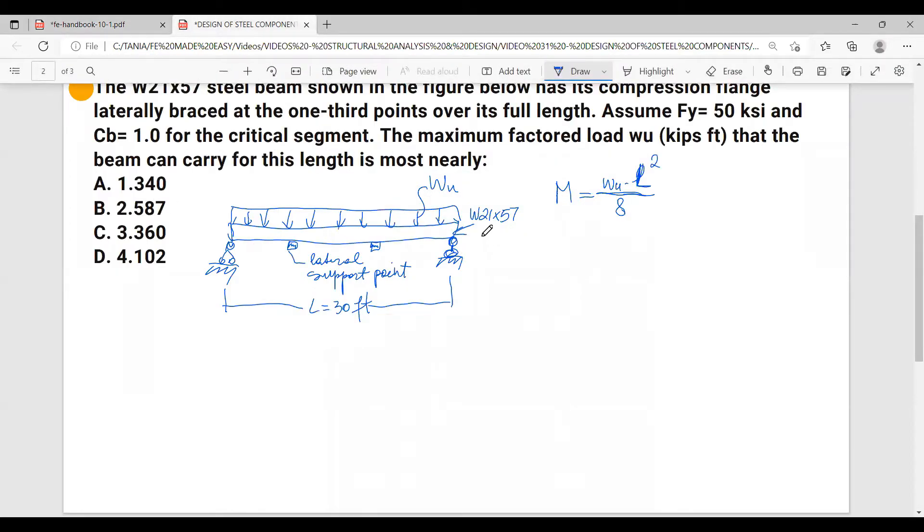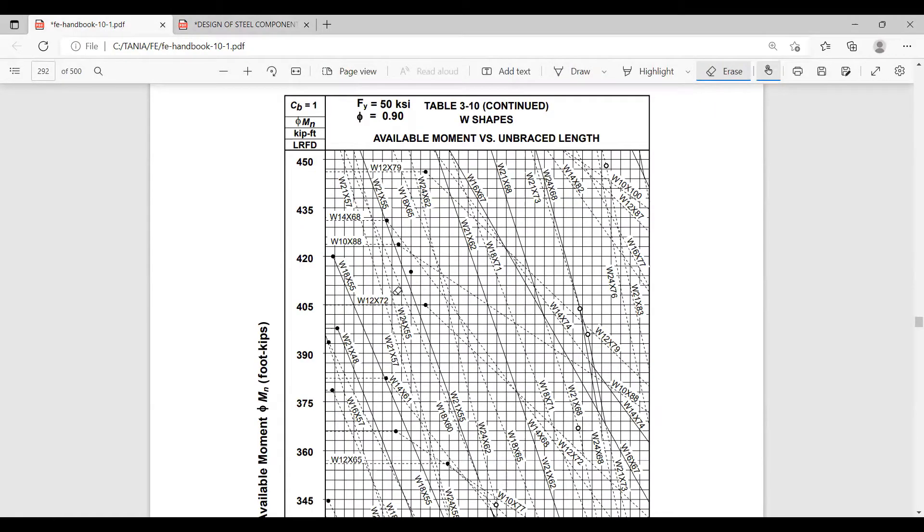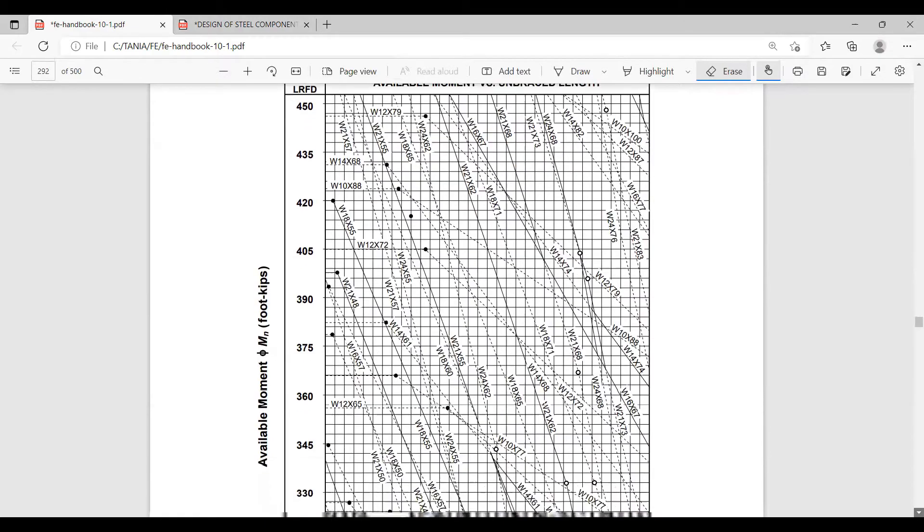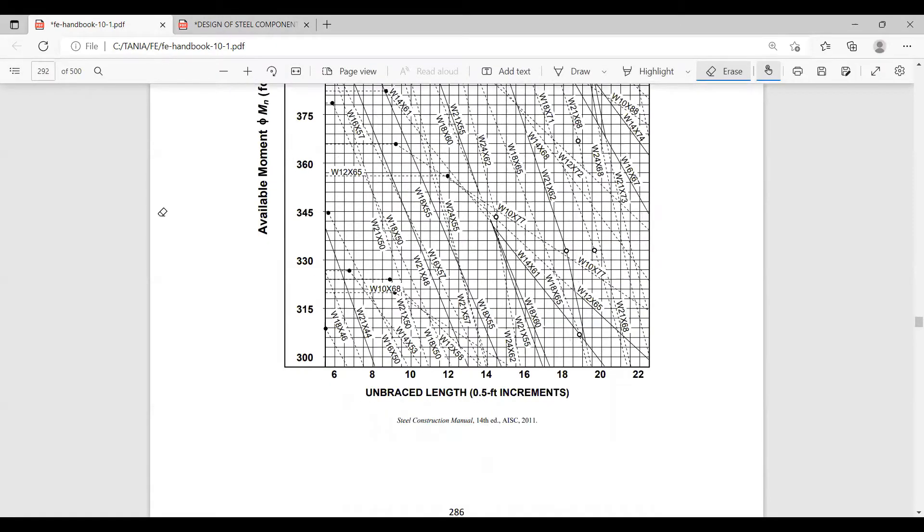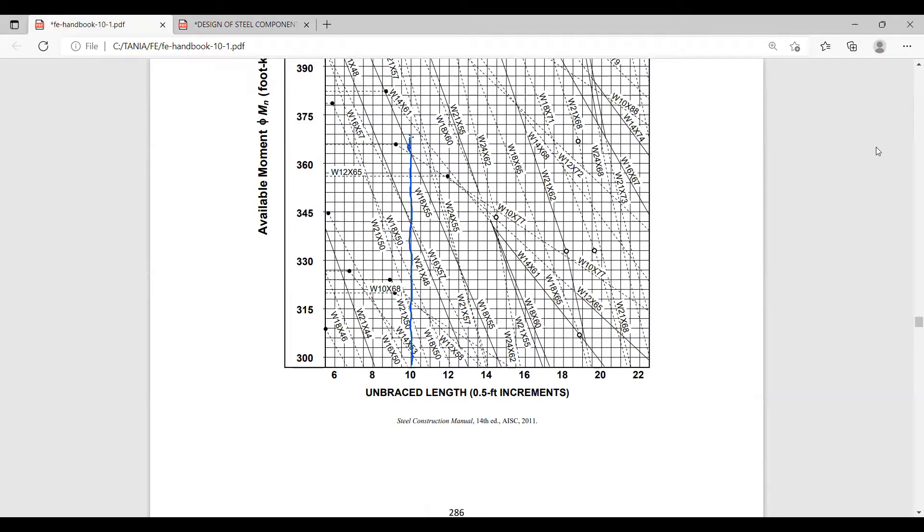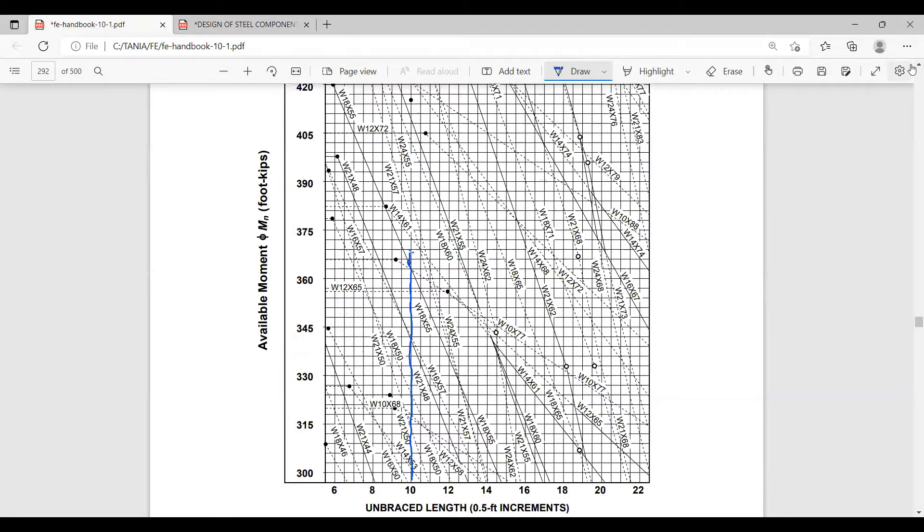So what we do with this, we have 10 feet and we also know that the beam is W21x57, is right here. So let me see what's the easiest way. I will go down here and I will look, we have unbraced length and we have available moment. We can figure out the available moment phi mn. So let's start by first go to unbraced length which is 10 feet and I will try to draw a straight line.